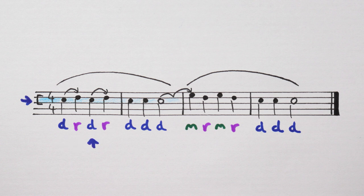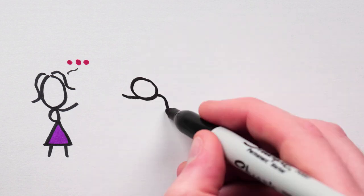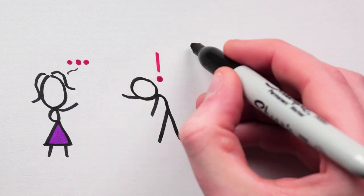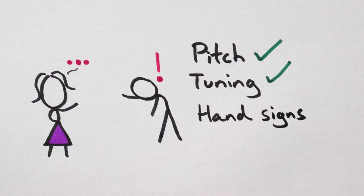Do, Re, Do, Re, Do, Do, Do... Mi, Re, Mi, Re, Do, Do, Do. And remember... Wait, don't tell me. Focus in on the centre of the pitch for good tuning, and use the hand signs for pitch and timing, right? Right. We've been saying it a lot, but it really is super important.